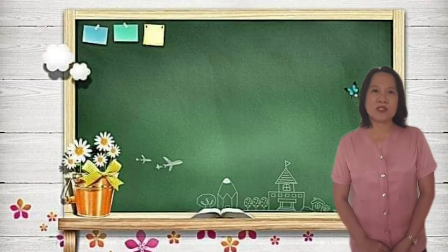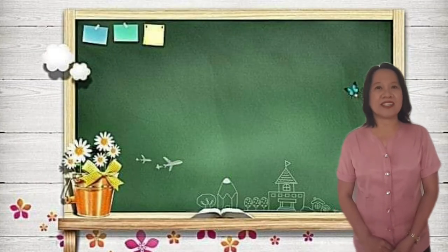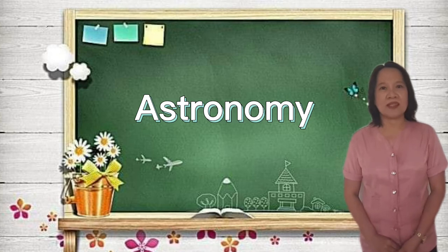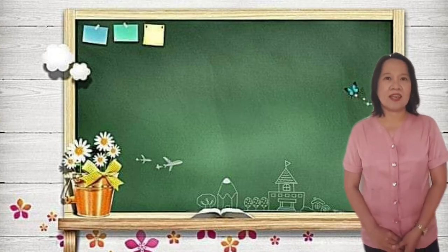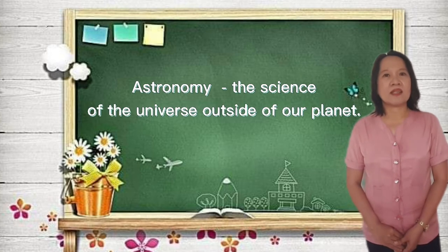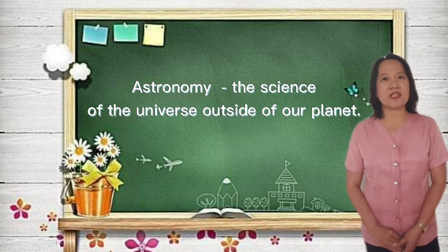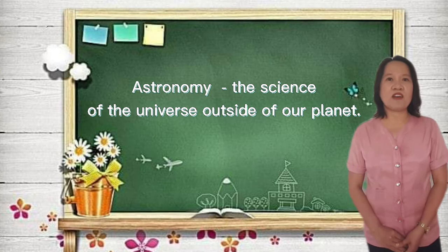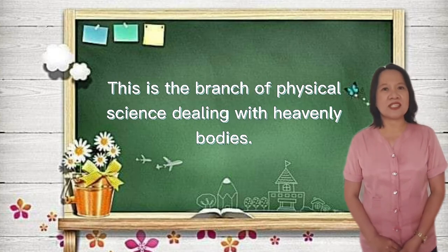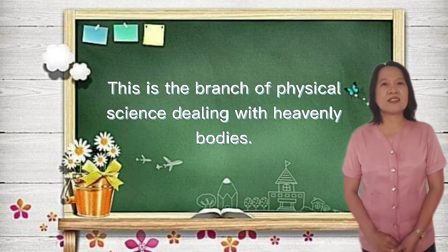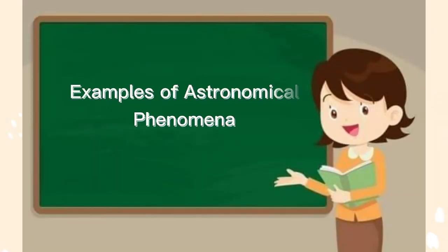I presume that you already heard about astronomy. Now let us define the word. Astronomy is the science of the universe outside of our planet. This is the branch of physical science that deals with heavenly bodies. Let us now know the examples of astronomical phenomena.